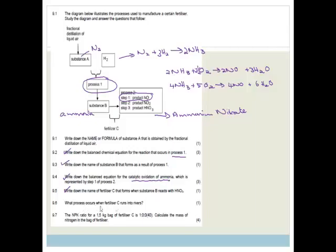And it says, what process occurs when fertilizer C runs into the rivers? So what happens is sometimes the fertilizer runs into the rivers, and the rivers become very nutrient rich. And when they become nutrient rich, they actually end up killing the river. Because what happens is the algae grow too much, and because they grow too much, they block out the sun, and then they start dying off, and then the fish die, and then basically that water just becomes unusable. And the process is called eutrophication, and you guys need to learn about it. It's important, eutrophication.